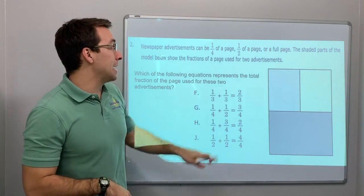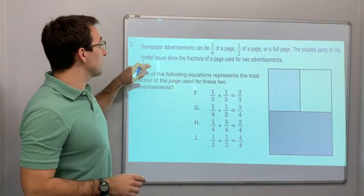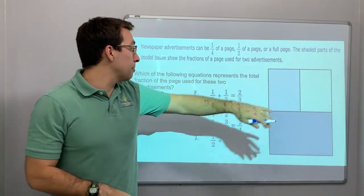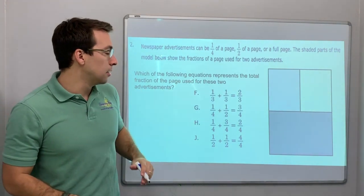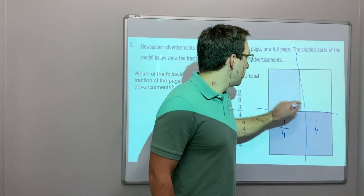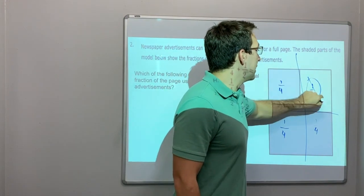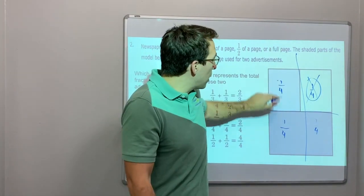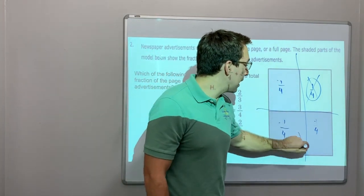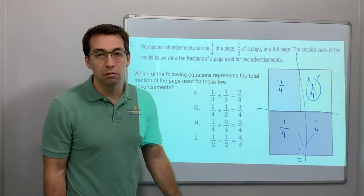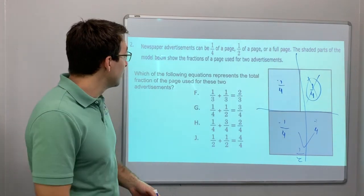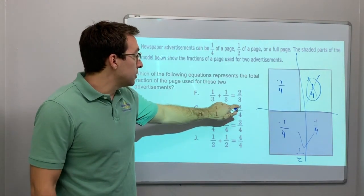Newspaper advertisements can be one quarter of a page, one half of a page, or a full page. The shaded parts of the model show the fractions of the page used for two advertisements. One half plus one quarter plus one quarter — that's three quarters shaded. Think of it this way: if you have 50 cents and you're given another quarter, you have 75 cents — three quarters. So one quarter plus one half is three quarters. That is correct.